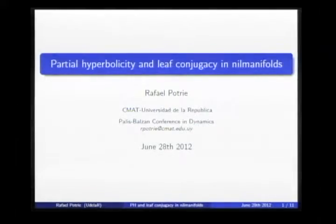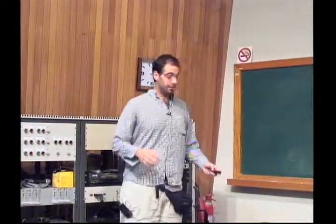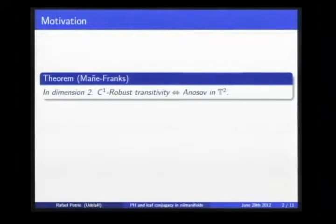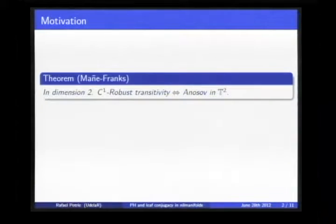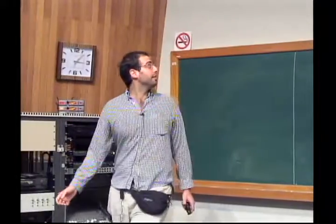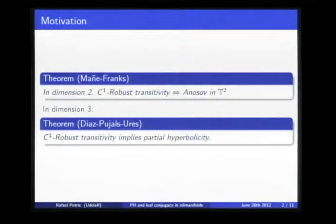Thank you very much for the invitation. The subject of my talk will be partial hyperbolicity and three-dimensional manifolds. To motivate its study, there is a theorem by Mañé and Franks which essentially characterizes C1 robust transitivity in surfaces as Anosov diffeomorphisms in the torus. This result in dimension three was extended — Mañé's result was extended by Díaz, Pujals and Ures showing that partial hyperbolicity is a necessary condition for robust transitivity.